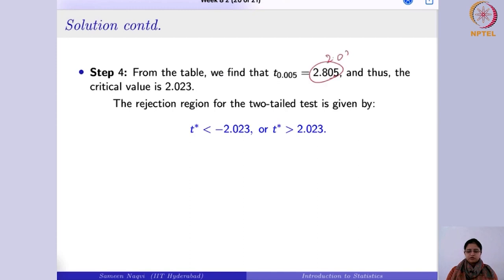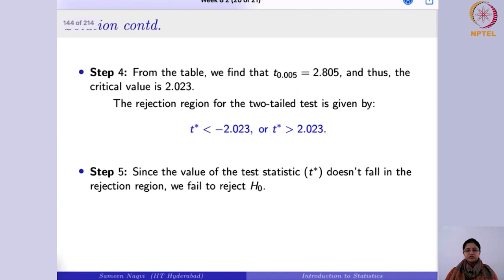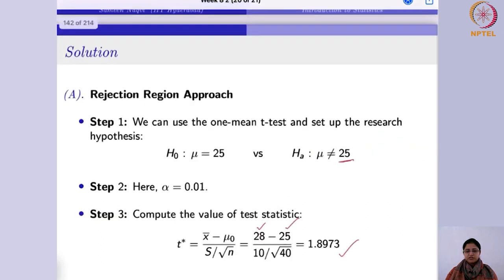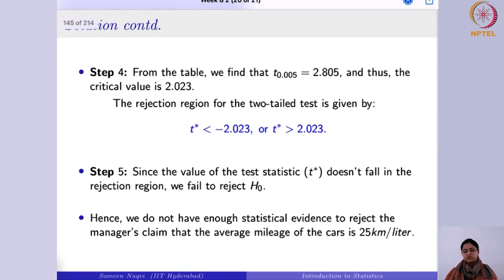The t* = (28 − 25)/(10/√40) ≈ 1.8973. For α = 0.01 (two-tailed), t_{α/2} = t_{0.005} ≈ 2.023. The rejection region is |t*| ≥ 2.023, meaning t* < −2.023 or t* > 2.023. Since 1.8973 does not fall in the rejection region, we fail to reject the null hypothesis.